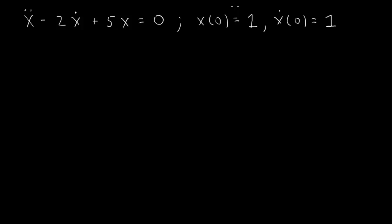Let's solve x double dot, the second derivative of x with respect to time, minus 2x dot plus 5x equals 0, with the initial conditions x of 0 equals 1 and x dot of 0 equals 1.